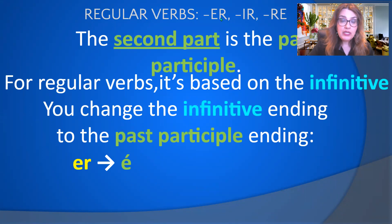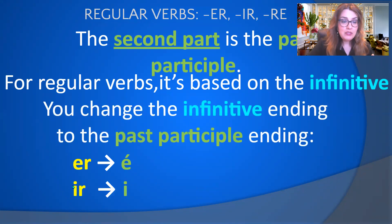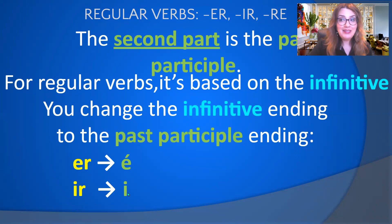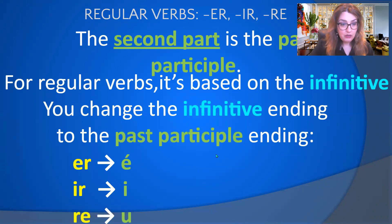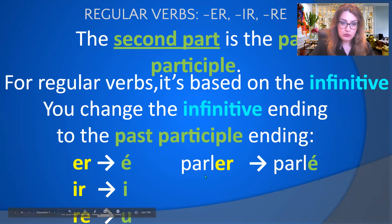Each regular verb ending in ER has a past participle ending in é (e accent aigu). If the verb ends in IR and is regular, the past participle ends in I. If the verb ends in RE and is regular, its past participle ends in U.